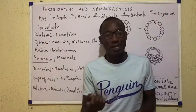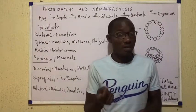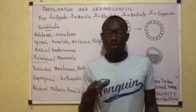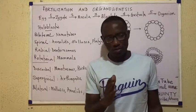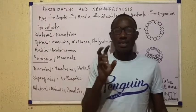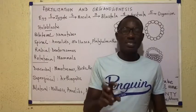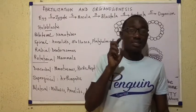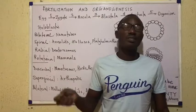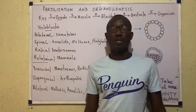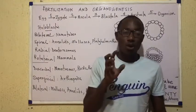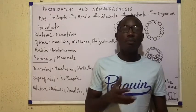our eggs are usually microlecithal. The yolk content is very little. Unlike the yolk of a bird like a domestic fowl — when it lays an egg, that egg contains plenty of yolk. That yolk is enough to sustain the developing embryo throughout the entire period of development until it hatches. So throughout the process of development, all the nourishment it will get comes from the yolk. But in the case of humans,